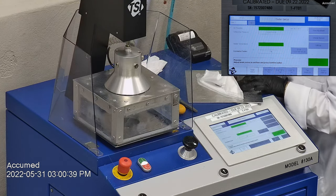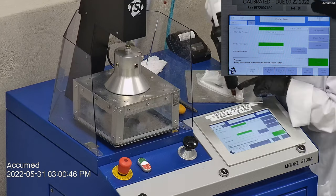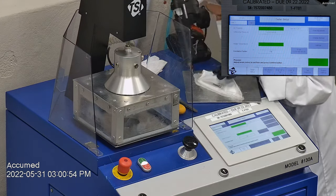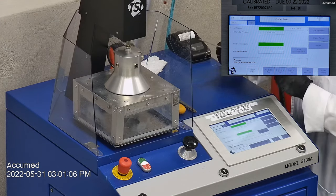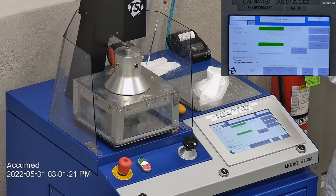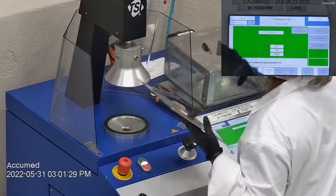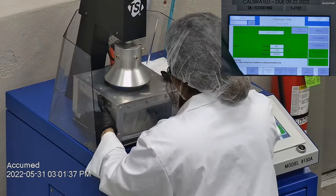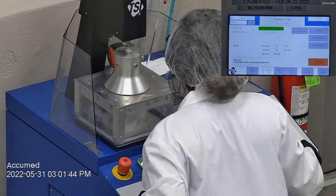The results are displayed on the TSI monitor. F stands for air flow rate, which we test at 85 liters per minute. R is for resistance, also referred to as pressure drop. This correlates with the breathability, so the lower the number, the more comfortable and breathable the mask is. E stands for filtration efficiency percentage.